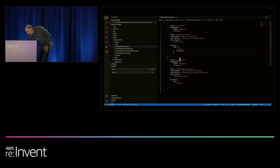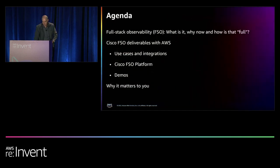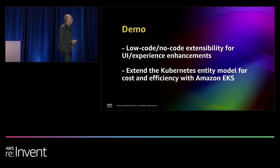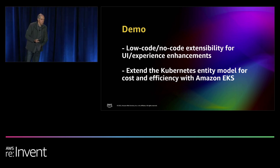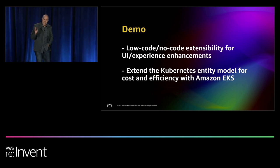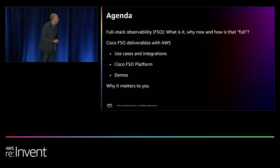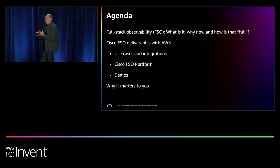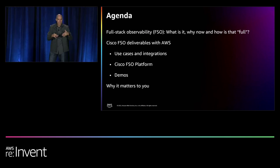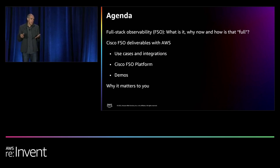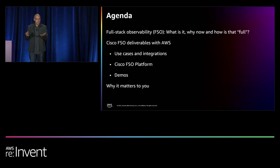That's pretty much what I had for the demos today. We went through low-code no-code extensibility for experience enhancement, and extending the Kubernetes entity model for efficiency on EKS. This is just a teaser — expect a lot more at the tech preview in February and at the Cisco booth. Full stack observability is happening. It's not a should, it's an industry transition that is a business must. We are on the forefront to drive this trend together with AWS, and I expect you to engage with this at your own companies at your own pace.